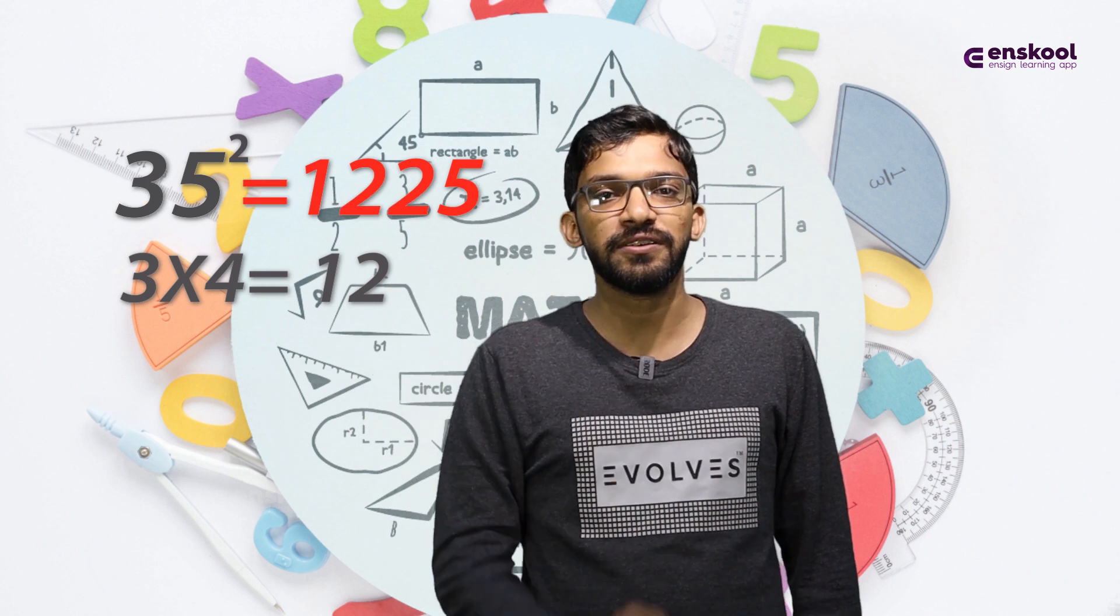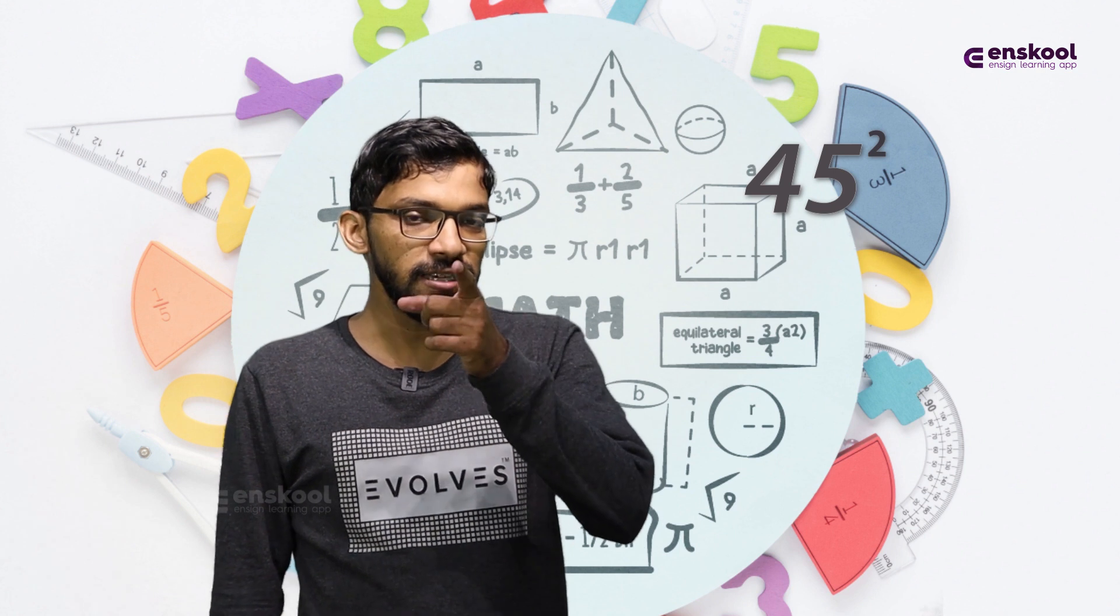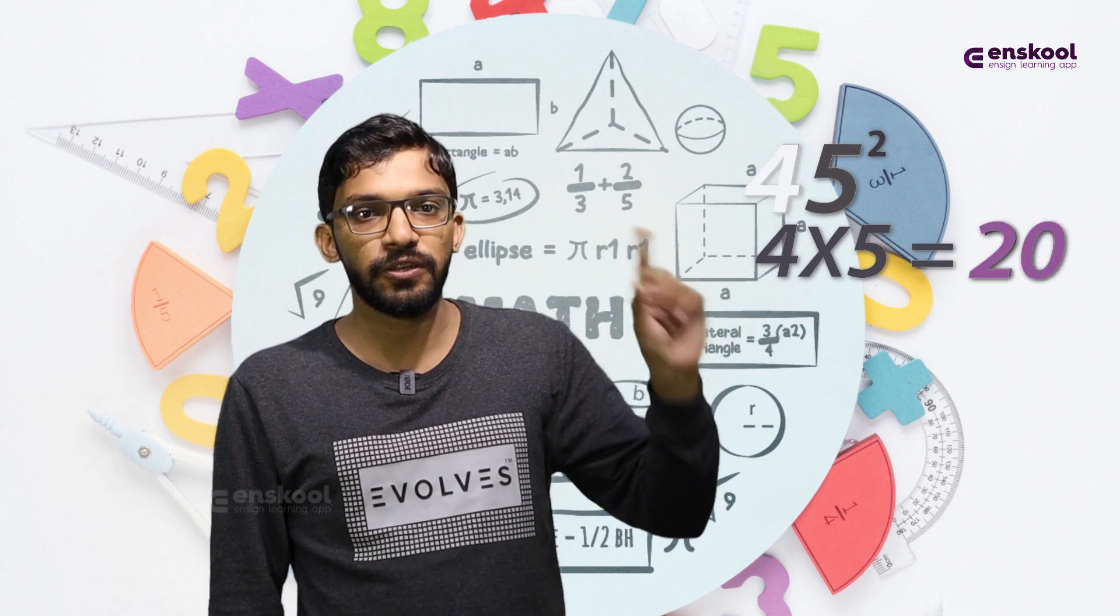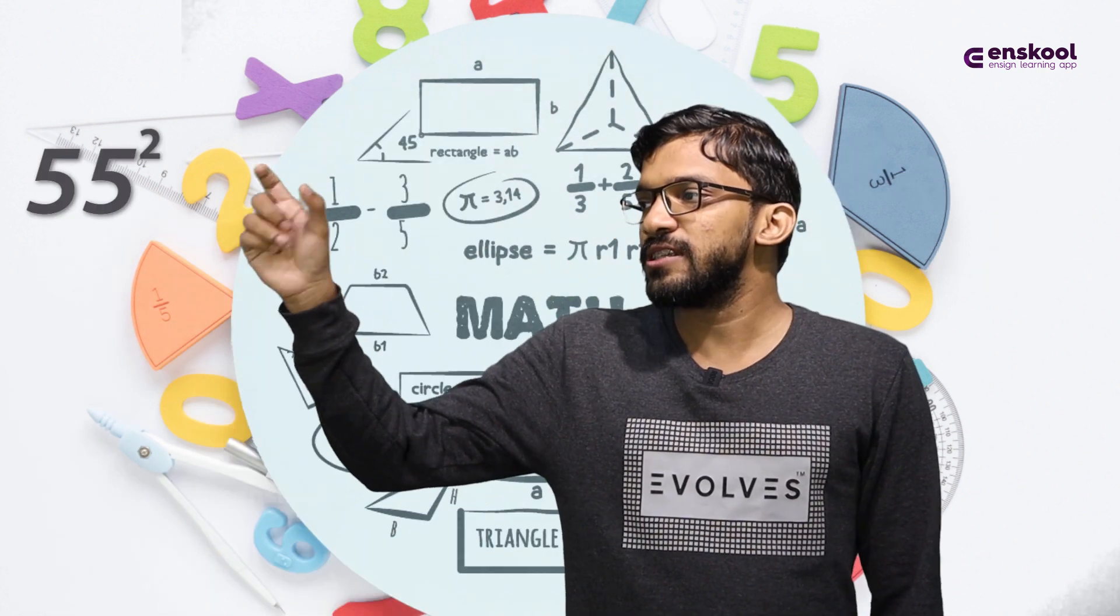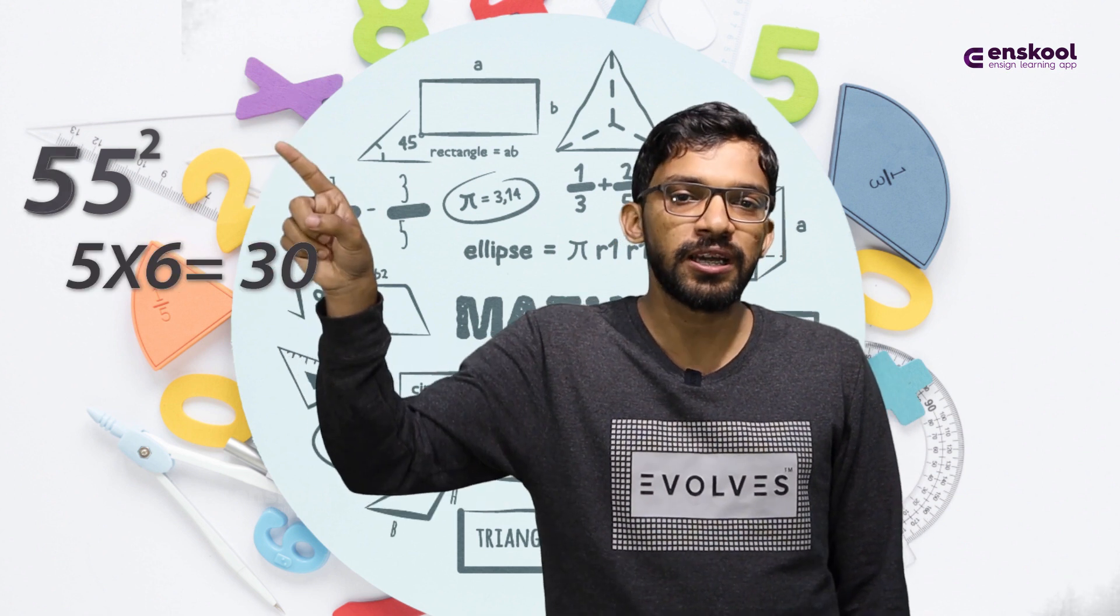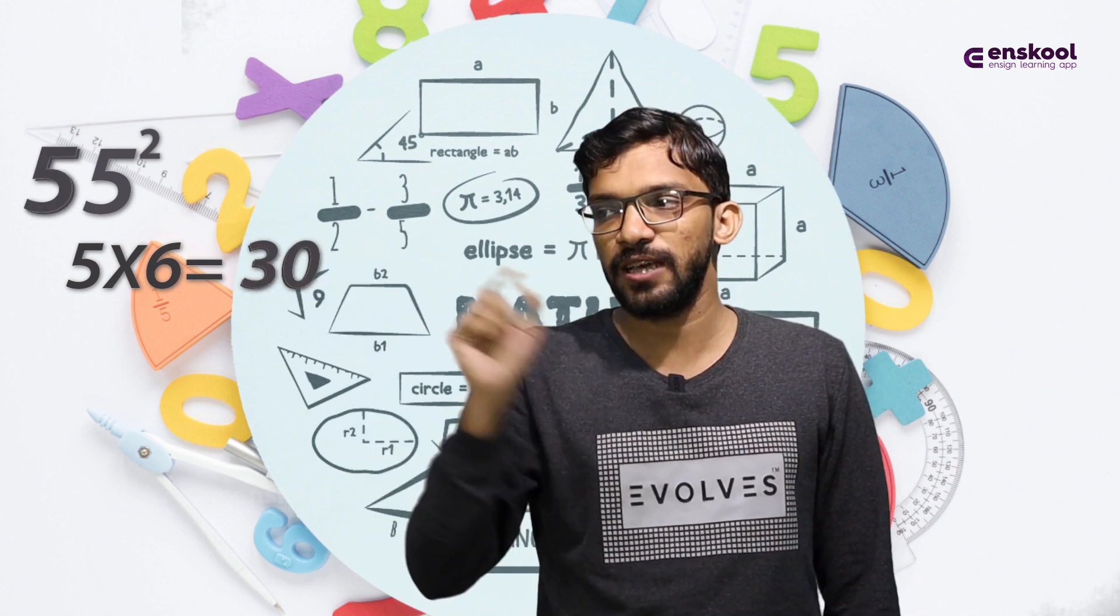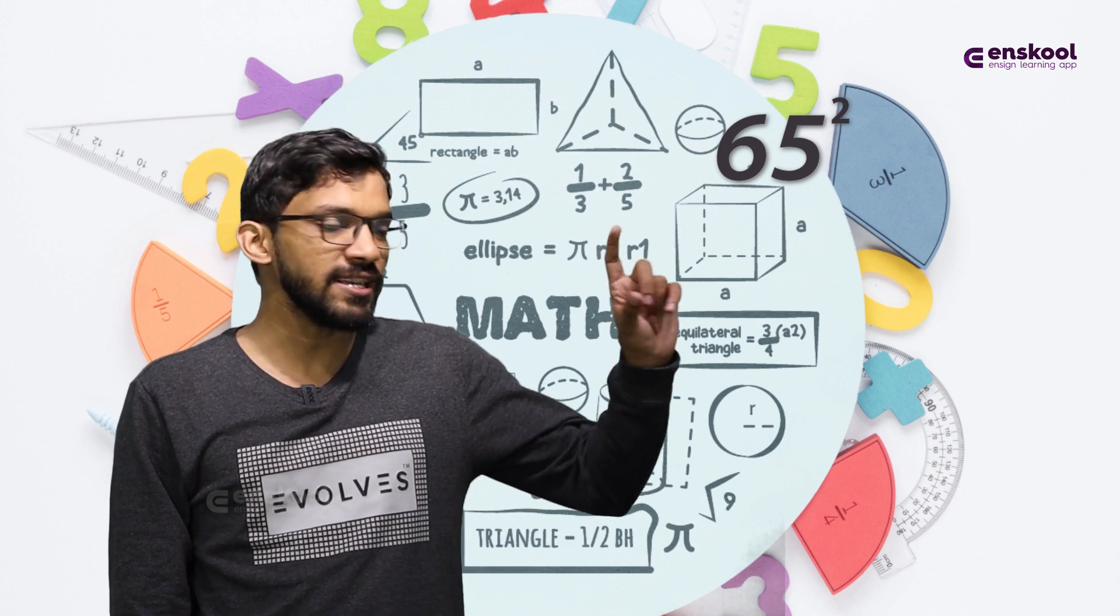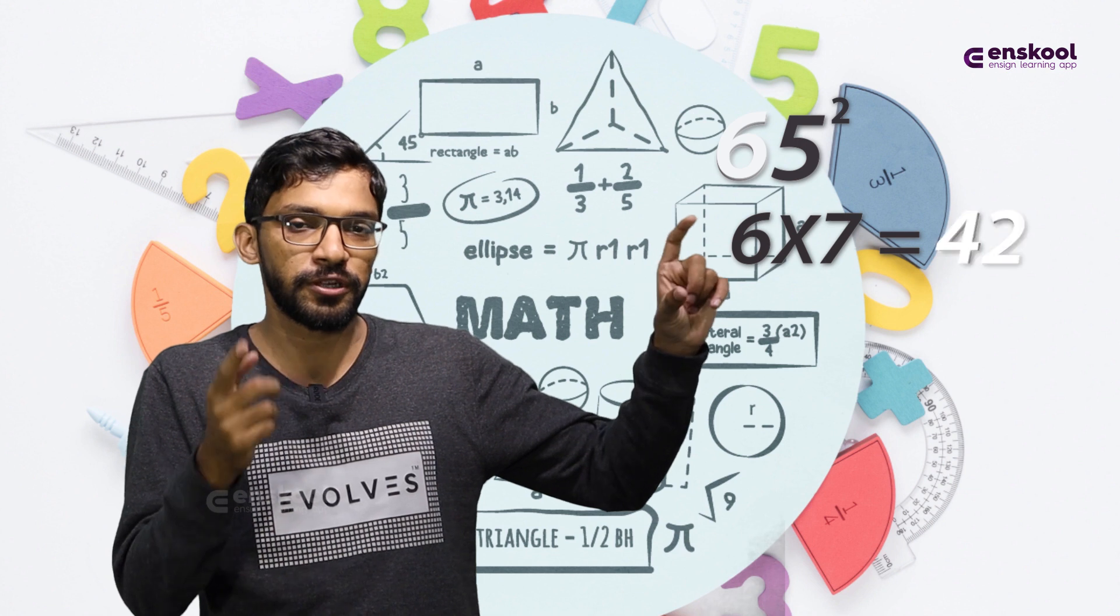45 squared: 4 times 5 is 20, so 2025. 55 squared: 5 times 6 is 30, so 3025. 65 squared: 6 times 7 is 42, so 4225.